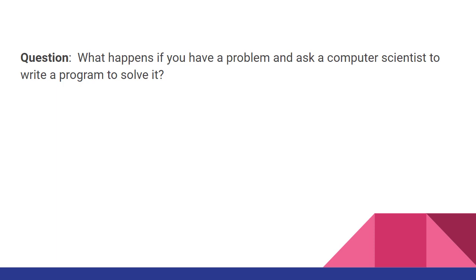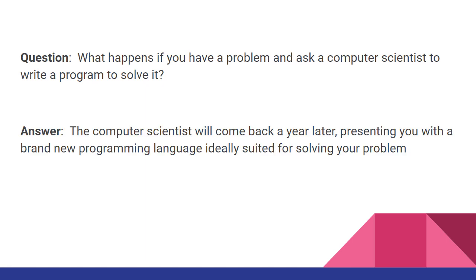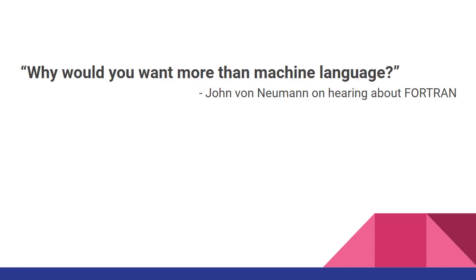We'll start off with a joke: what happens if you have a problem and ask a computer scientist to write a program to solve it? The answer is that the computer scientist will come back a year later presenting you with a brand new programming language ideally suited for solving your problem. That's funny because it's true. John von Neumann asked the question, why would you want more than machine language? And that's something we'll actually talk about today.